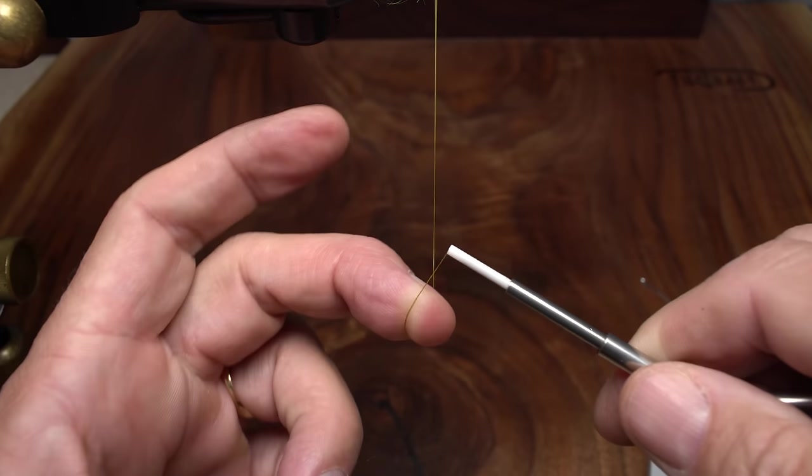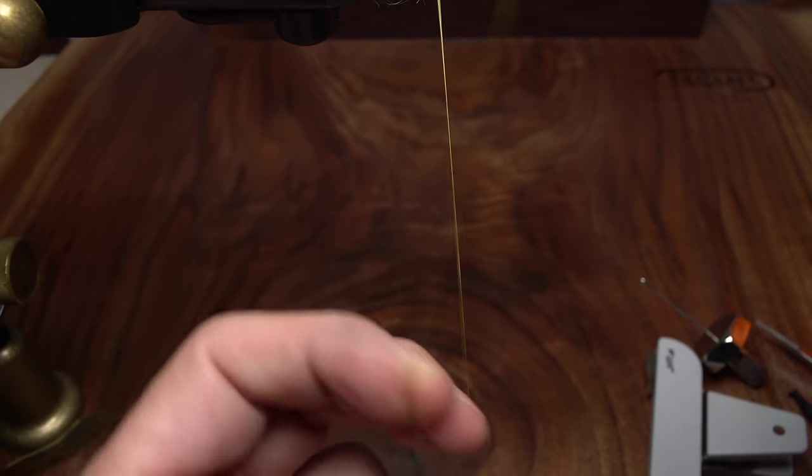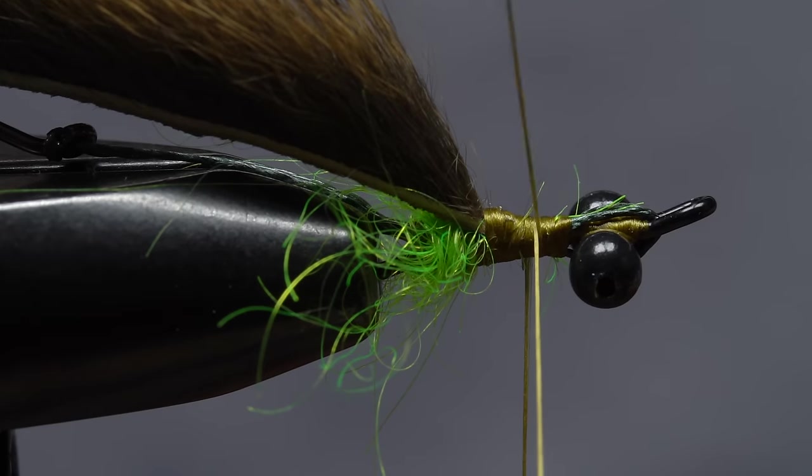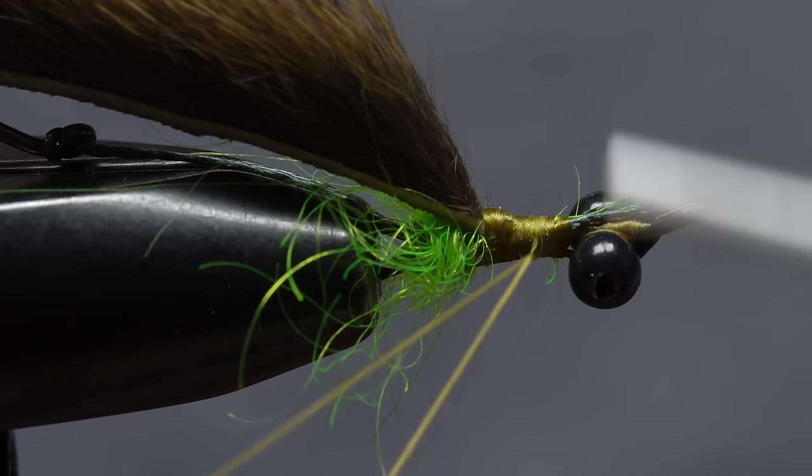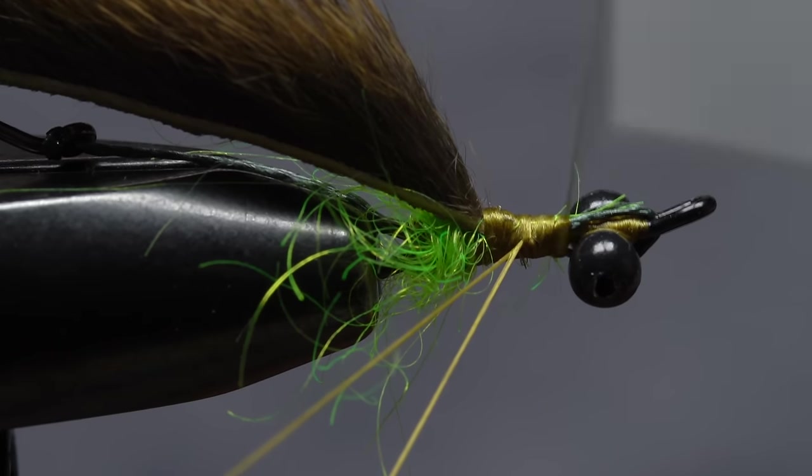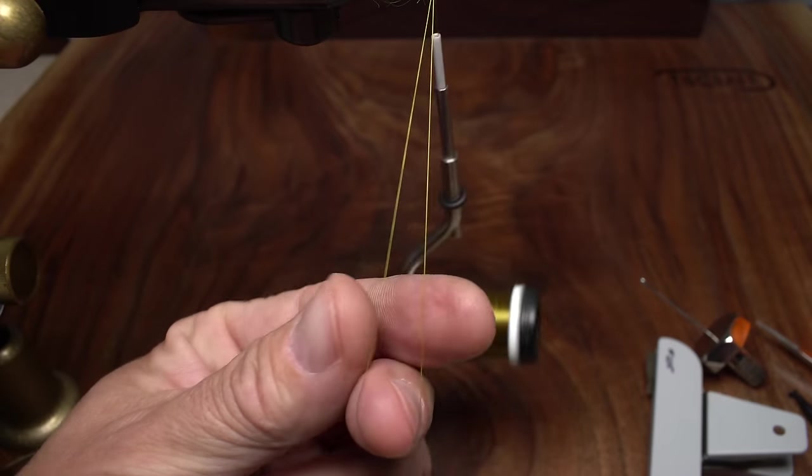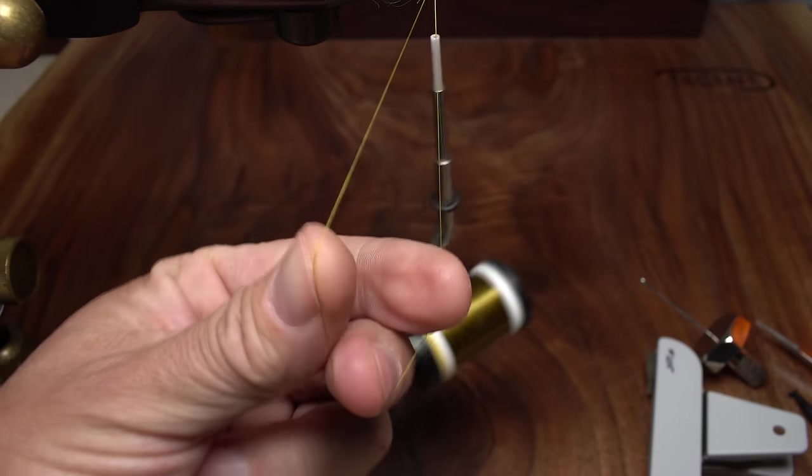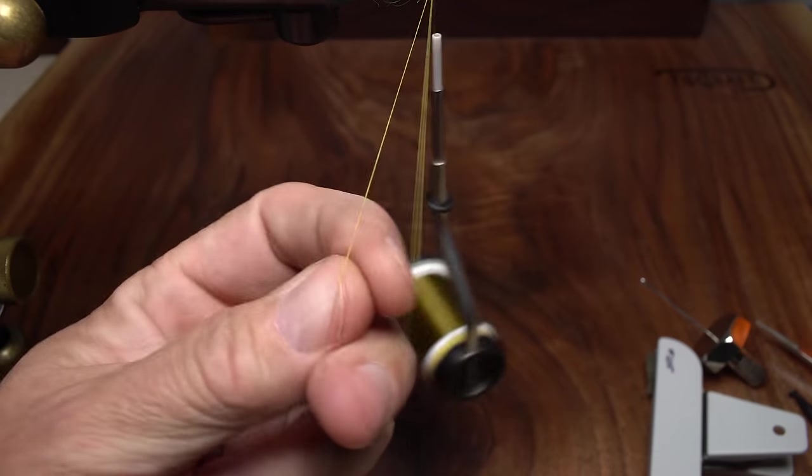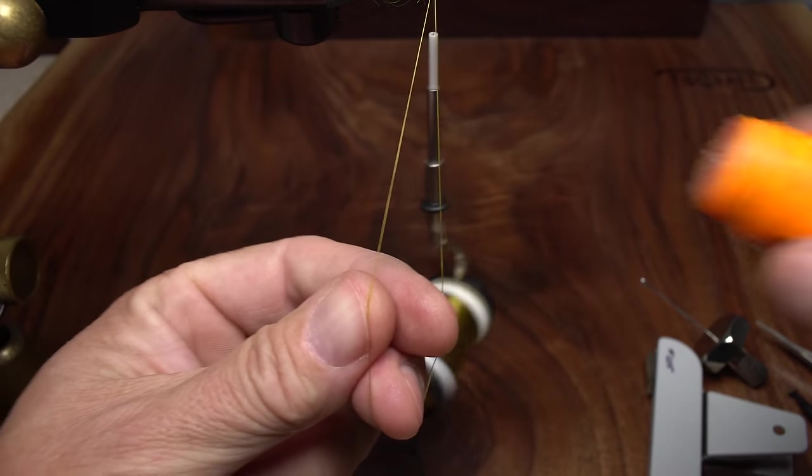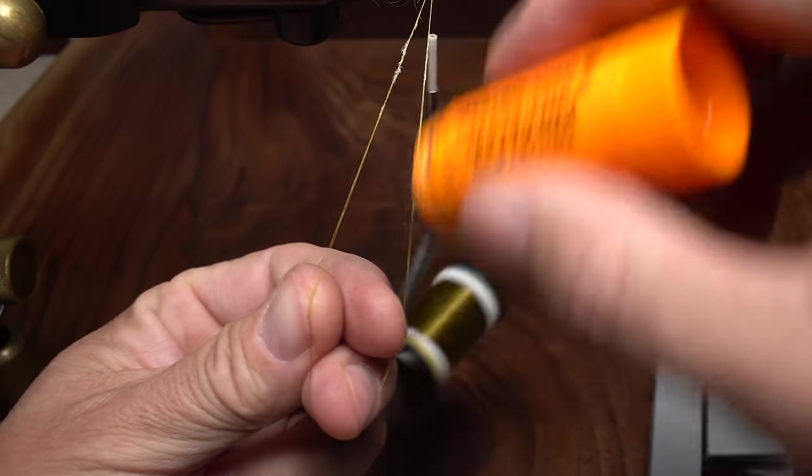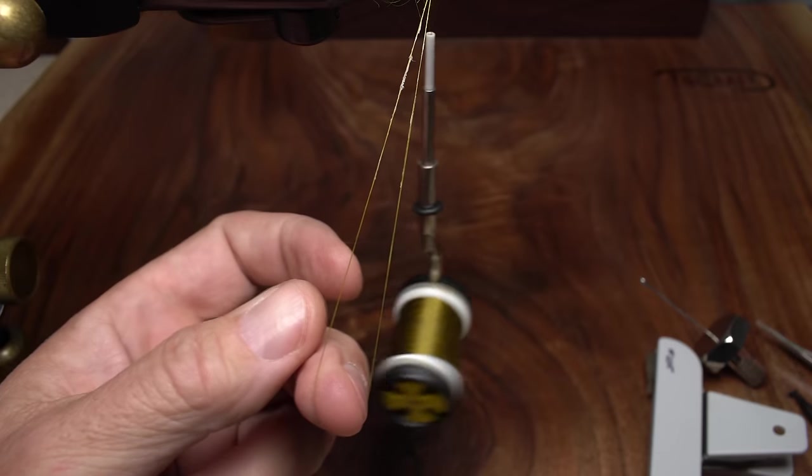Once again, pull down on your bobbin to form a dubbing loop with the tip of your middle finger at the bottom. Secure your tying thread to the shank in the same manner as before and end with your tying thread at the rear edge of the shank eye. Repeat the same finger calisthenics as before to practice opening and closing the loop. With the workout complete, apply a light skim of dubbing wax to both strands of the loop.